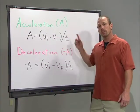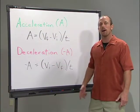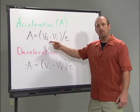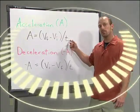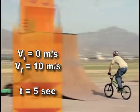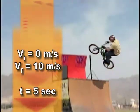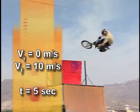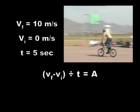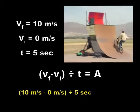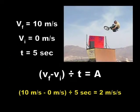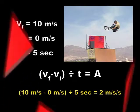Both acceleration and deceleration can be defined mathematically, provided you know the beginning velocity, the final velocity, and the time it takes them to change. If a BMX rider goes from 0 to 10 meters per second in 5 seconds, can you calculate the acceleration? A BMX rider going from 0 to 10 meters per second in 5 seconds would have an acceleration equal to 2 meters per second per second.